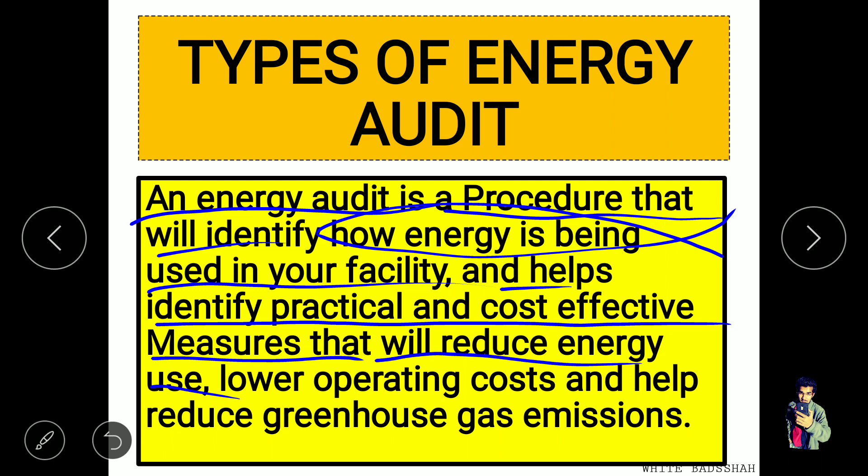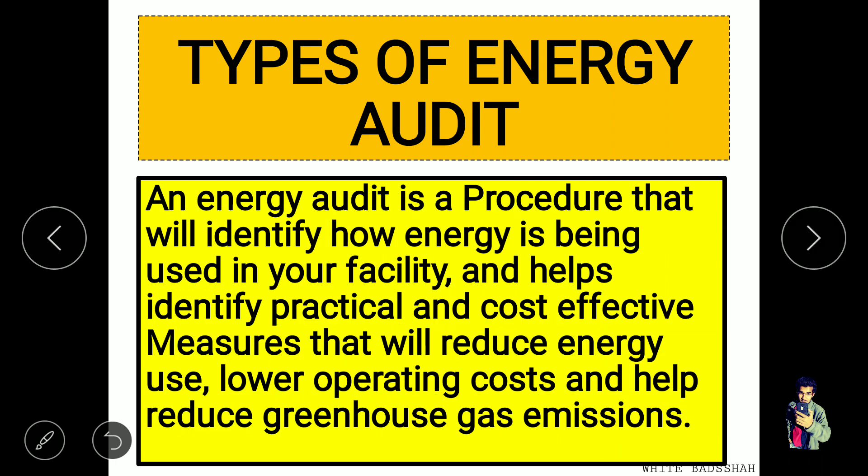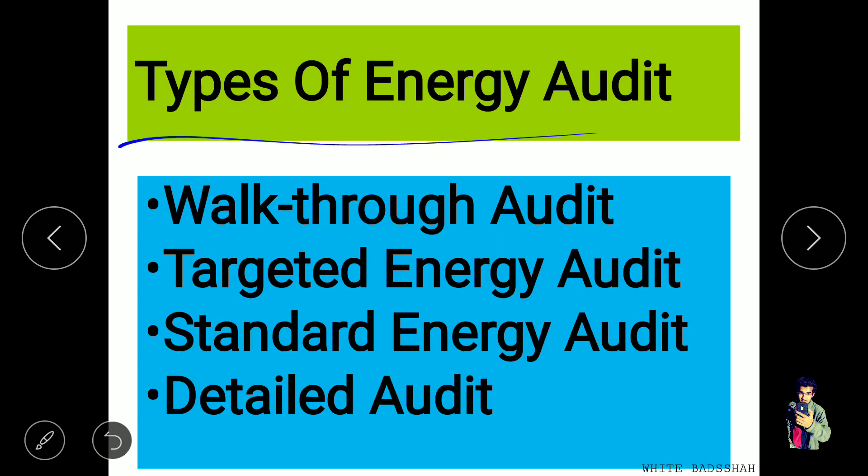If we know how energy is used in your company and we can reduce those factors, then we can reduce the cost of the electricity bill. The lower operating cost also helps reduce greenhouse gas emissions. If we can reduce the use of energy, then indirectly the greenhouse gas emissions are also reduced.